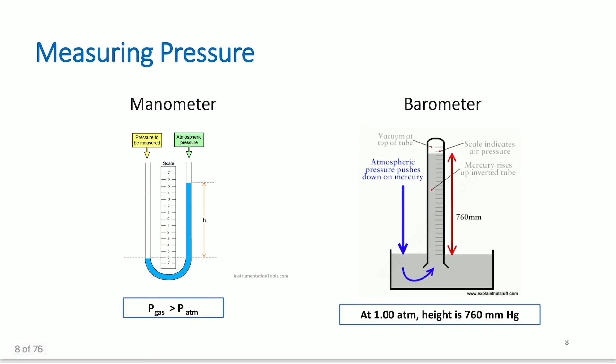Manometers work in a similar fashion. Barometers: we've got your atmospheric pressure pushing down on the mercury, pushing this up. Mercury is pushing down. There's a vacuum at the top of this tube, and the scale indicates the pressure of the air. At one atmosphere, the height on a barometer is 760 millimeters of mercury. Now we live in the U.S., so we measure this in inches, but we can convert from inches to millimeters.